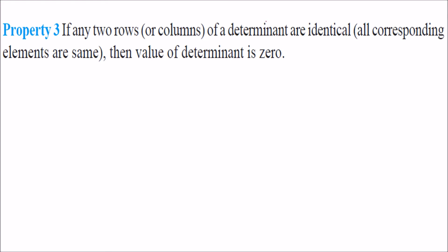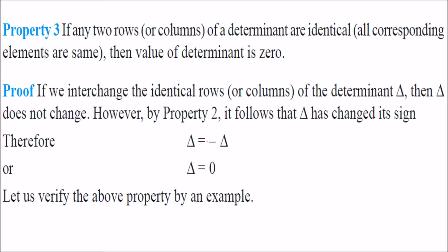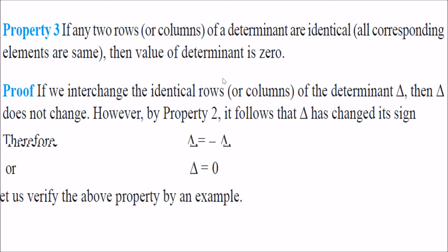Property 3: if any two rows of a determinant are identical, the value of the determinant is 0. If we interchange the identical rows, the determinant will not change, but by Property 2, it equals minus of itself. Taking delta to the other side, delta equals 0. This is how we can prove it.